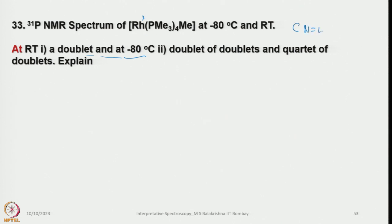When coordination number equals 5, only 2 options are there: square pyramidal or trigonal bipyramidal. Since it shows a doublet at room temperature, and remembering that 103Rh has I = 1/2 and is 100% abundant, with rhodium-to-phosphorus coupling in the range 150 to 300 Hz, this doublet explains that all 4 trimethylphosphines are equally coupled to rhodium, resulting in one signal that looks like a doublet. So all 4 trimethylphosphines must be identical.